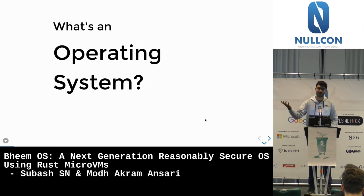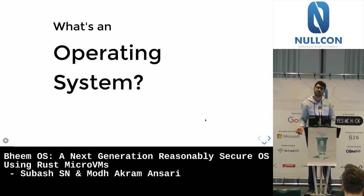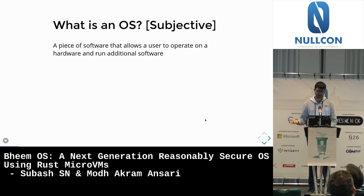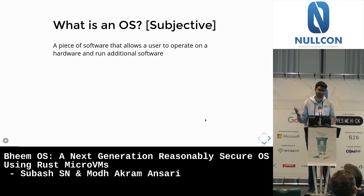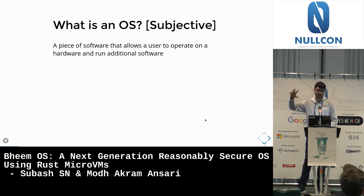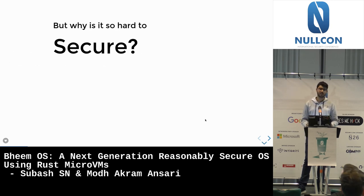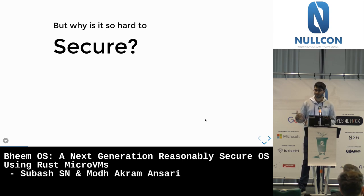What is an operating system? The most sensible definition that made sense to me: it's a piece of software that lets you run other software on top of some hardware. Different people have made it in different ways — monolithic, etc. But the more interesting question for all of us is: why is it so hard to secure?